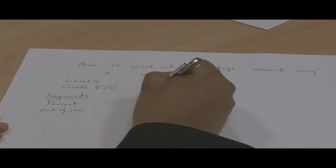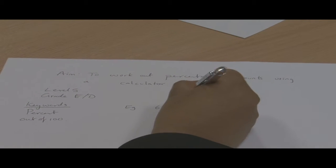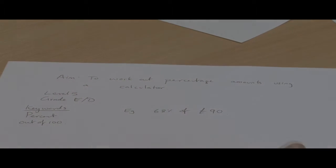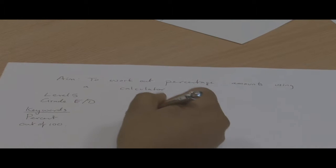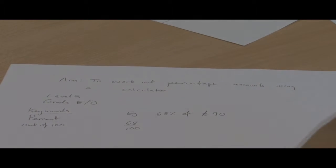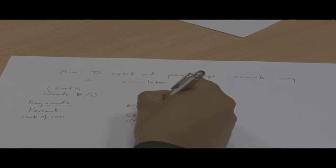So the first example, if you're asked to find 68% of 90 pounds, what we do is we put 68 over 100, because percent means out of 100, and then times it by the amount.